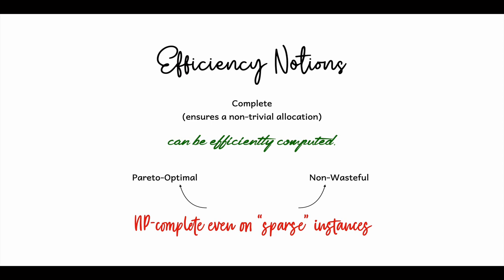Even in sparse instances, which are instances where every good is approved by a constant number of agents and every agent approves a constant number of goods.